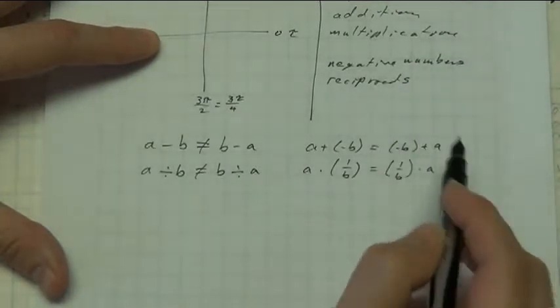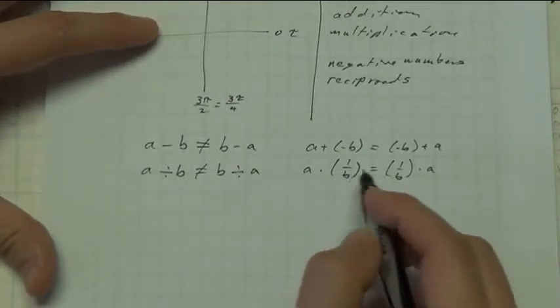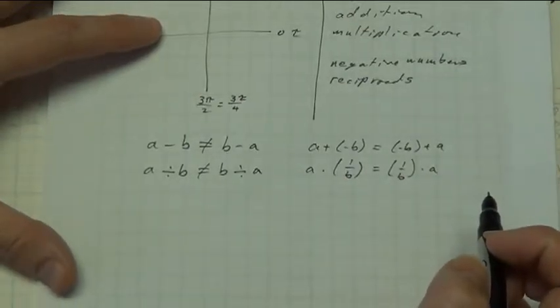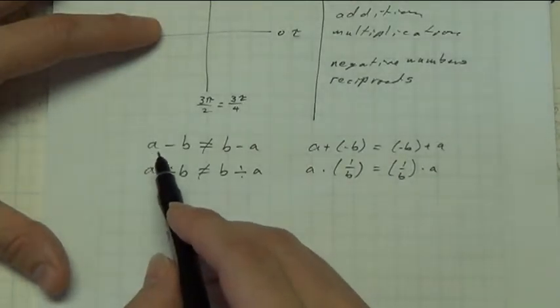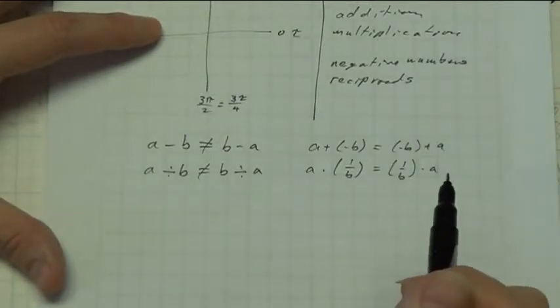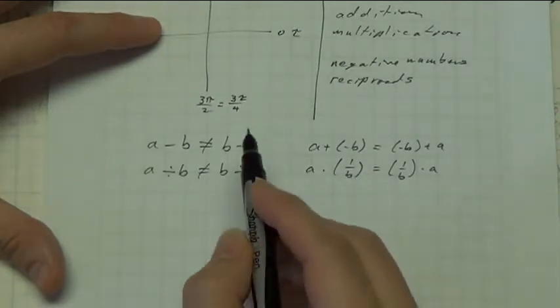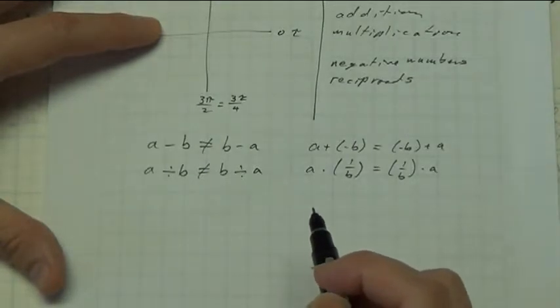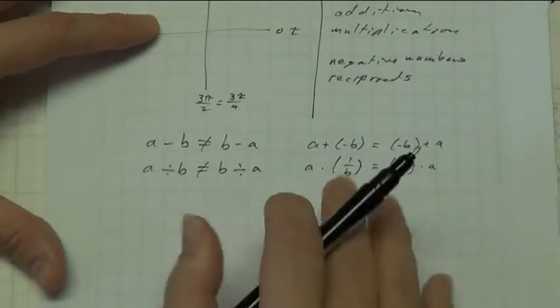Teaching negatives and reciprocals would allow us to keep this commutativity of our operations. And not have to say, oh, the big number's first, and then say later, oh, we lied, the big number doesn't have to come first, there are these things called negatives, and so on. I think negatives and reciprocals could be taught earlier than subtraction and division, and subtraction and division, when they're introduced, could be introduced as notational conveniences.